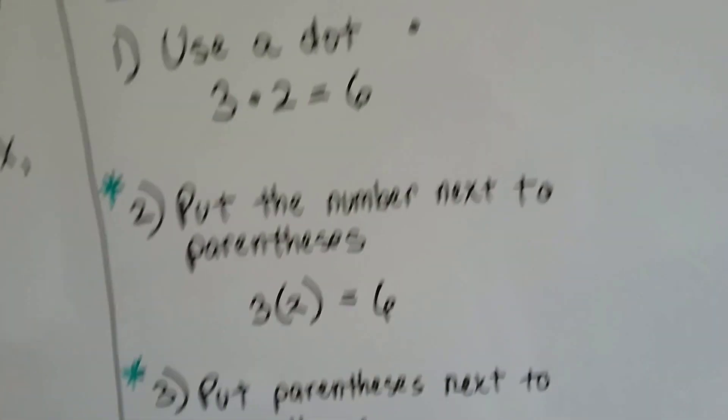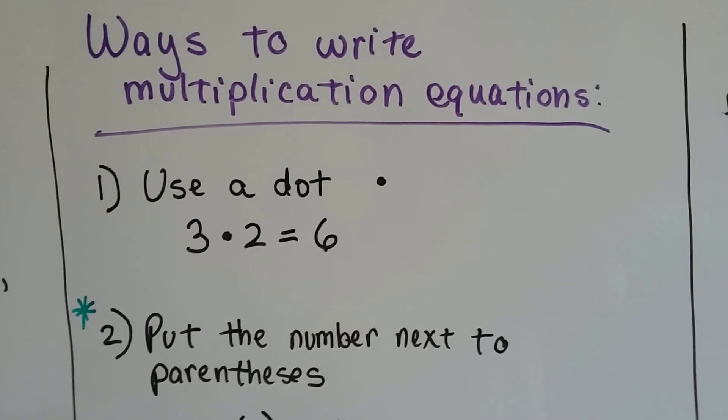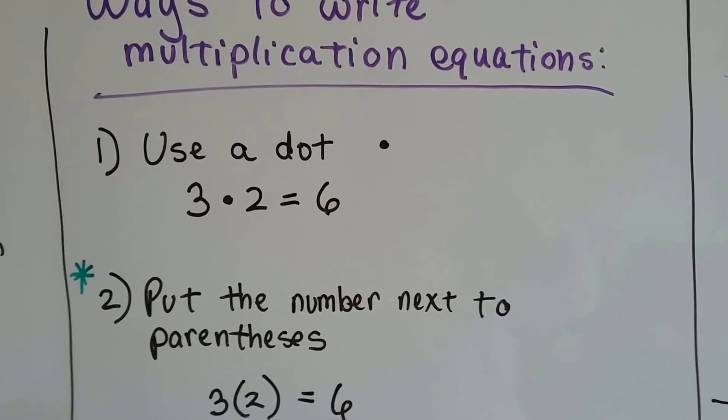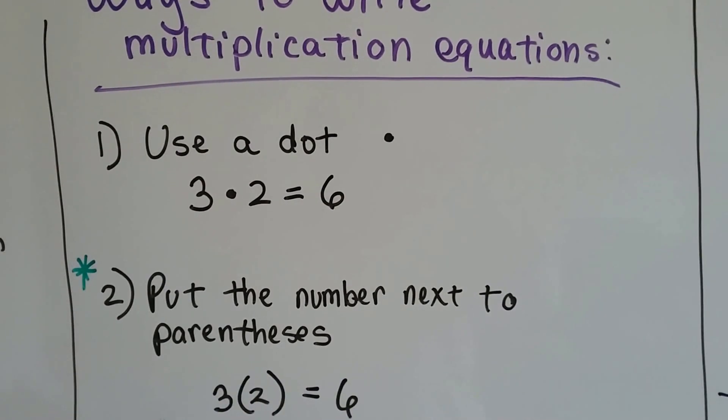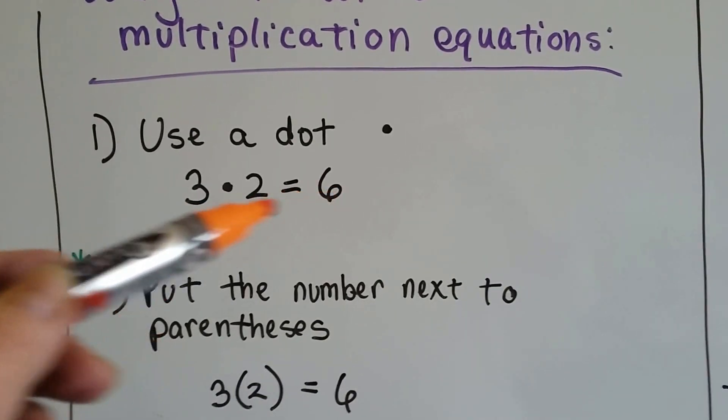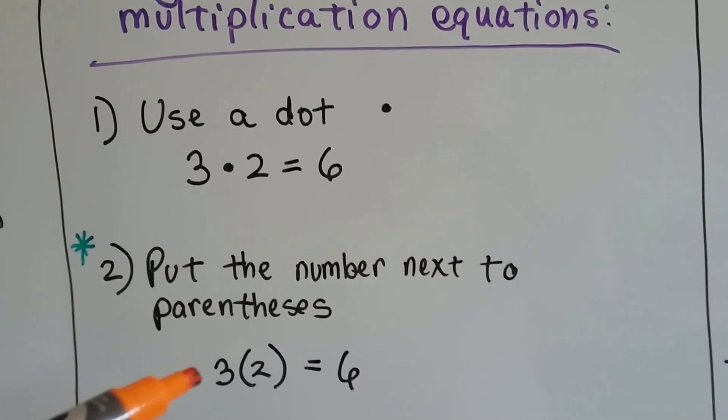But, from now on, because you're not a little kid anymore, here's the ways to write multiplication equations. You use a dot. This means three times two is six. That dot means to multiply.